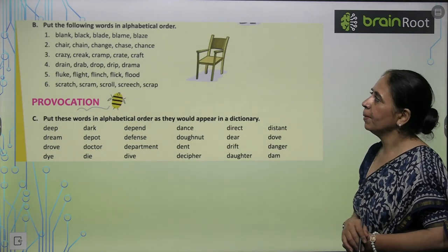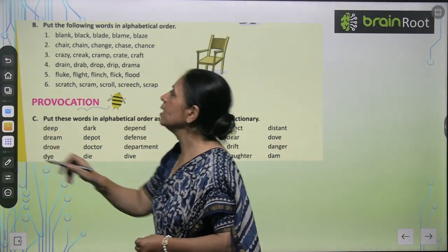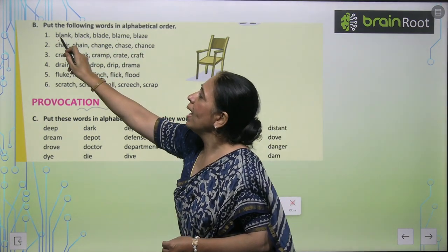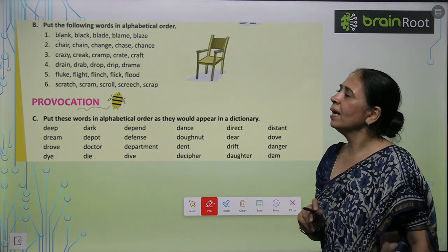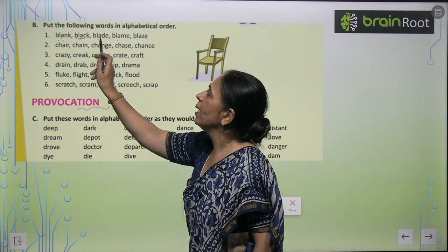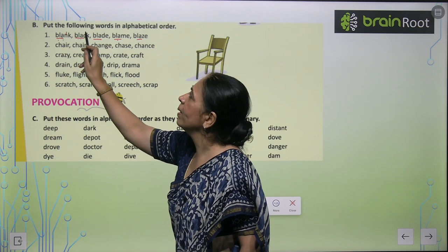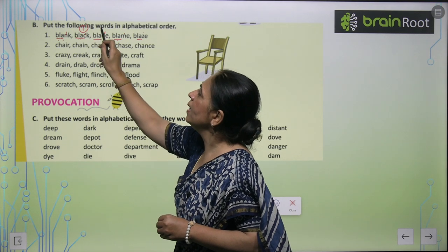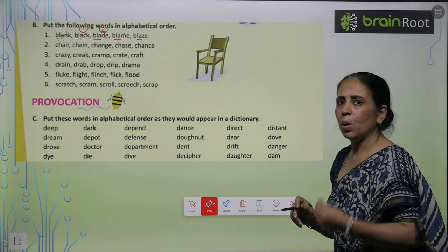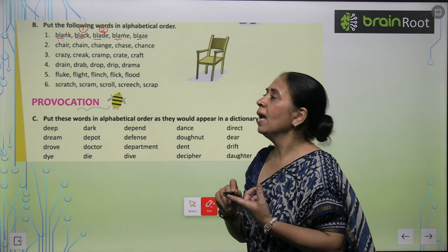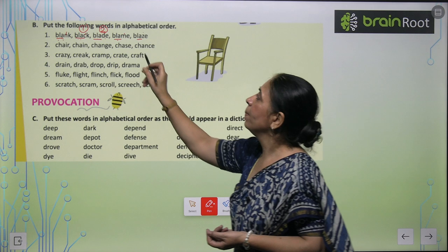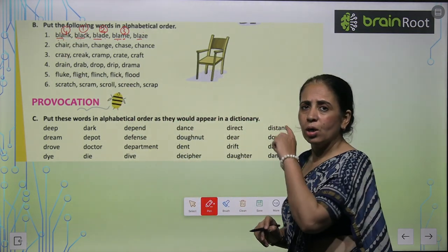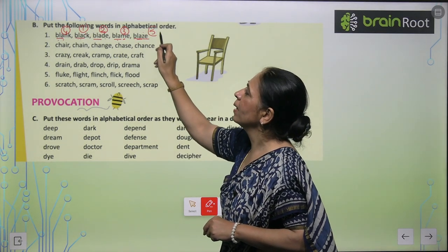Now we move ahead. You have to put these words in alphabetical order. You will notice that the first alphabet is B everywhere, then L everywhere, and then A is also coming as the third alphabet everywhere. So we skip to the fourth alphabet to compare. The word with C as the fourth letter comes first — that is number one. Then D is number two. Skipping E, F, G, H, I, J, K — yes, M is coming here, so that is third number. And where N appears in the blank, that will be fourth number. And at the very last comes blaze — so that will come at the last position.